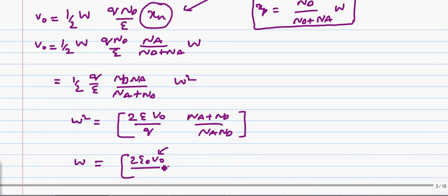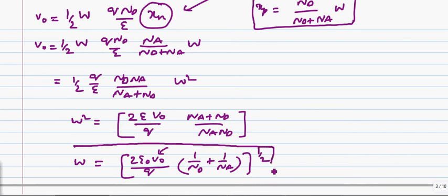Now, we can rewrite this equation w equals square root of 2·epsilon·v_0. You can write this v_0 as v_bi, which is built-in potential, 1 over n_d plus 1 over n_a, whole power half. This is the equation for depletion width.